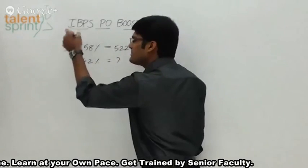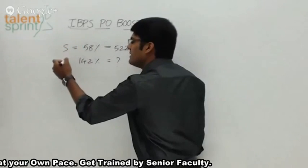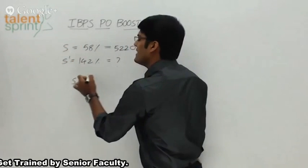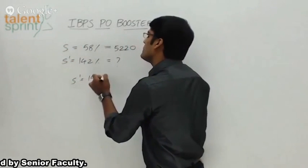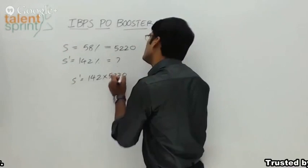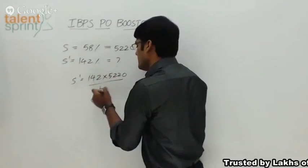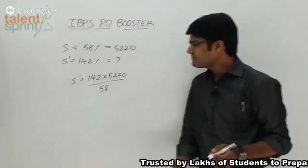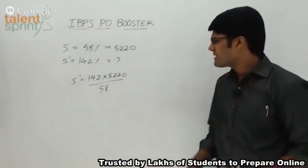This is the original selling price, and this is the new selling price S dash. So S dash can be calculated as 142 multiplied by 5,220, divided by 58.